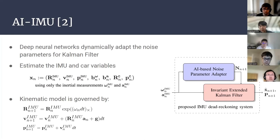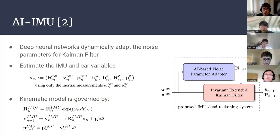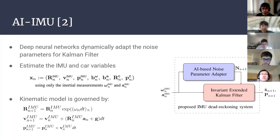We use AI-IMU as the state estimation part of our project. AI-IMU is a paper released in December 2020. It proposes an AI-IMU dead reckoning system with an AI-based noise parameter adapter and invariant extended Kalman filter. In AI-IMU, deep neural networks are employed to adapt the noise parameters of the Kalman filter, using IMU and car variable data to train those noise parameters.